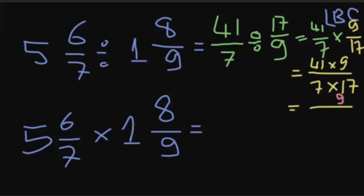41 times 9 equals 369. And now 7 times 17, 7 times 7 is 49, we keep 1, 7 times 1 is 8. Equals 119. This is the answer.